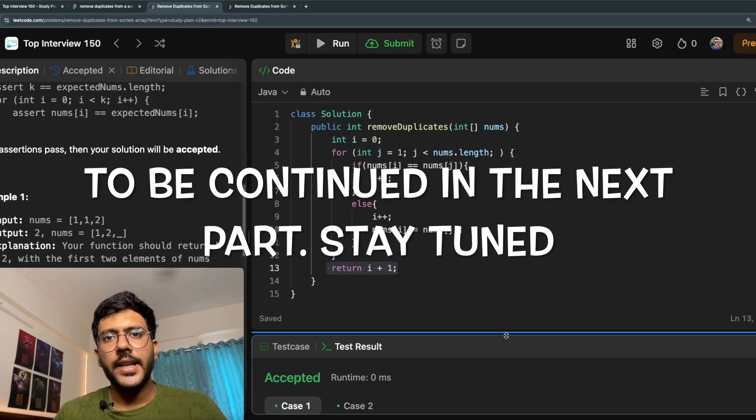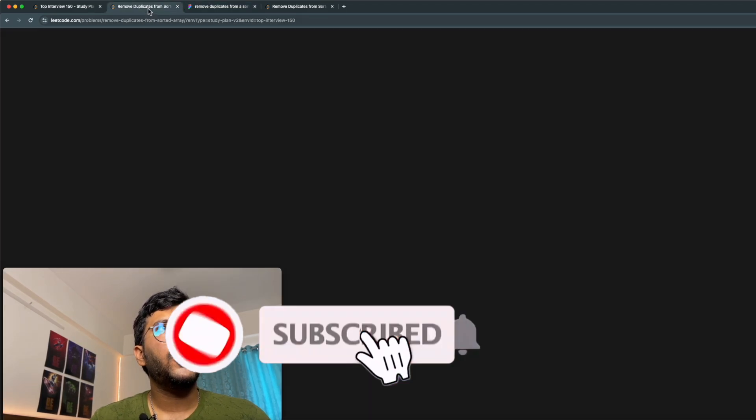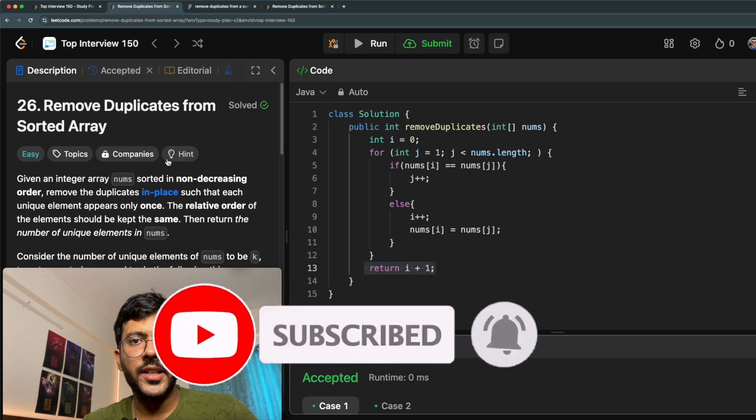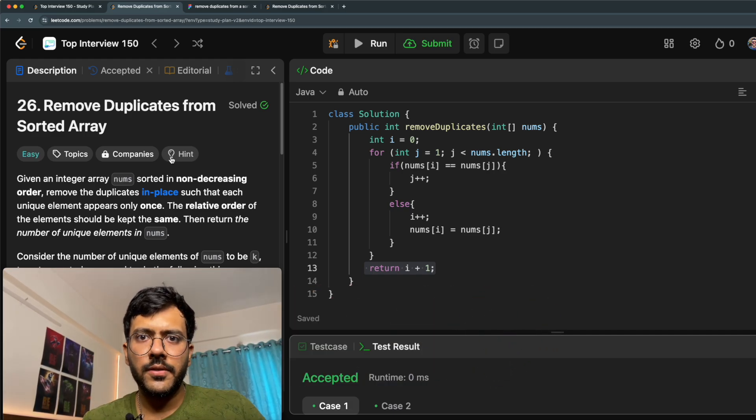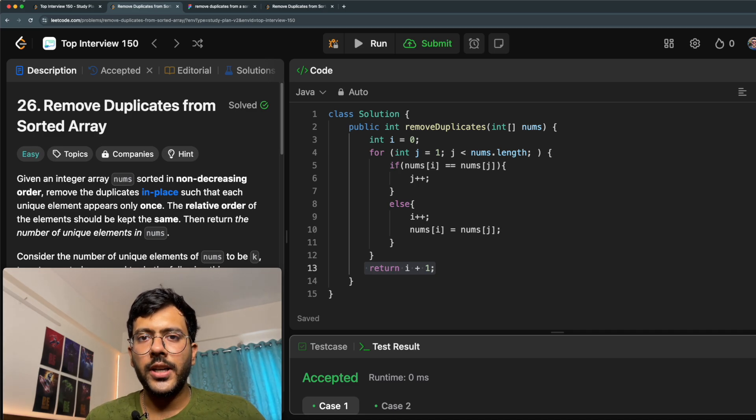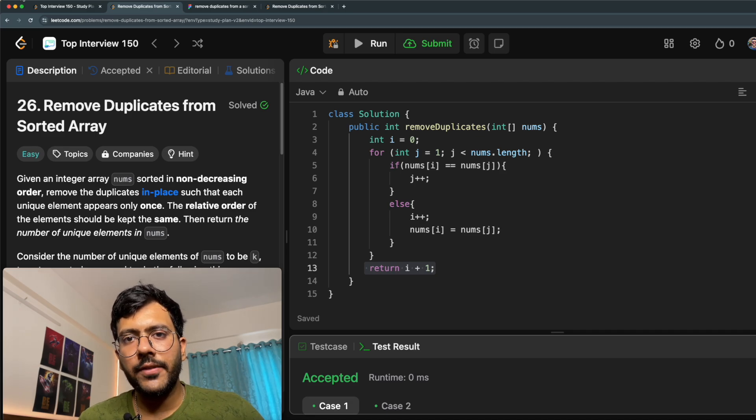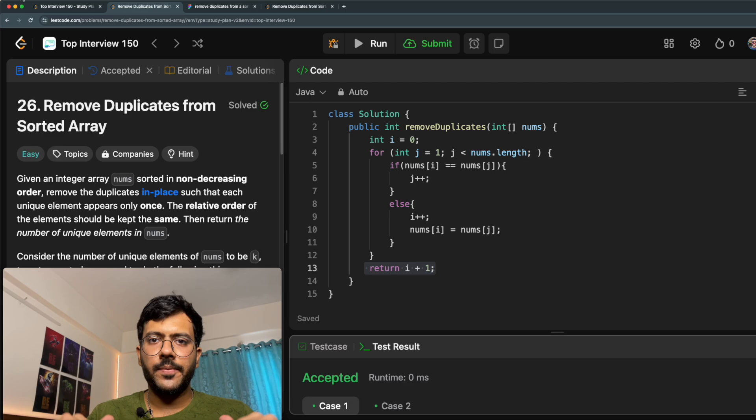Now there's a second variation of this problem. To do a quick recap, we looked at the remove duplicate from a sorted array problem. We saw both the brute force and optimized solution for this problem. The code for this problem is attached in the description below, so do check it out. And if you enjoyed this video, like it and share it with your friends and don't forget to subscribe to my channel Code with GD. Till then, happy coding. Bye bye.